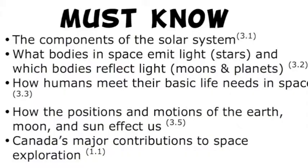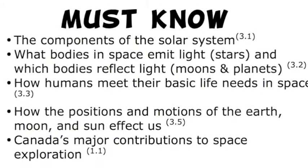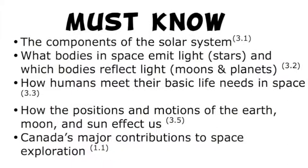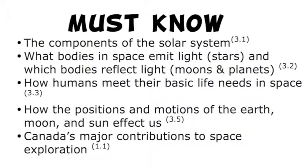From that, I formed the must know and the should know. The must knows were the ones that showed up in pretty much every lesson. So the components of the solar system was a must know; what bodies in space emit light versus reflect light — stars versus moons and planets; how humans meet their basic needs in space; how the positions of the Earth, moon, and sun affect us; and Canada's major contributions to space exploration. I felt these were things students needed to be able to answer coming out of the unit.